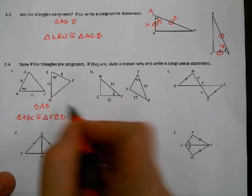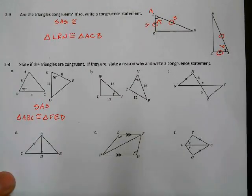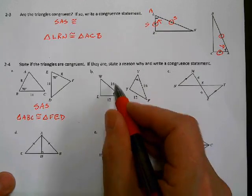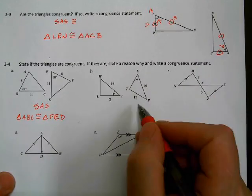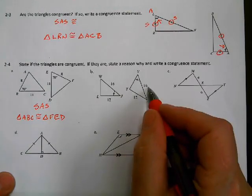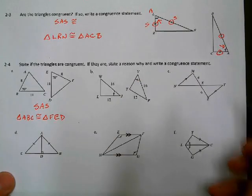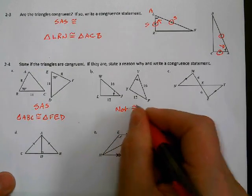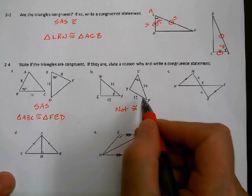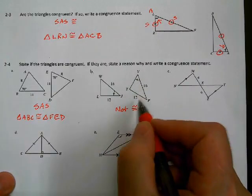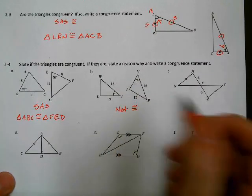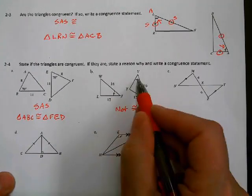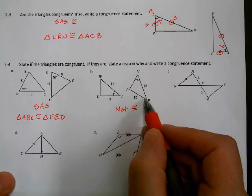Next one: I've got 12, angle, 16 on one triangle and 12, 16, angle on the other. That is not congruent, because this one is Side-Angle-Side but that one is Side-Side-Angle. The angle is included for the first but not for the second — the angle for SAS has to be directly between the two sides.